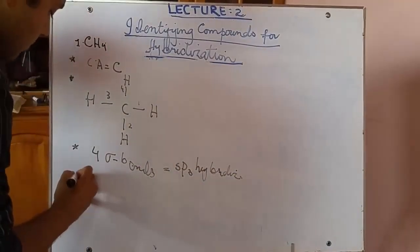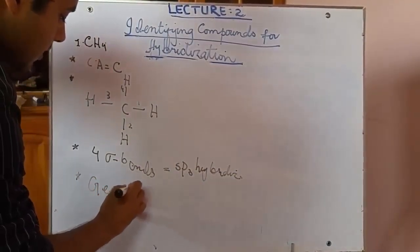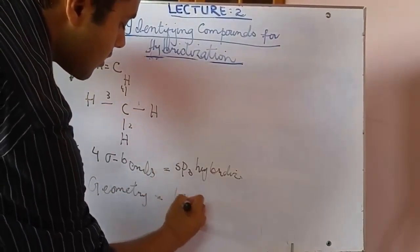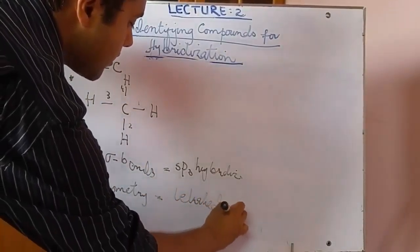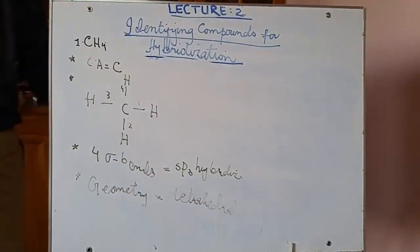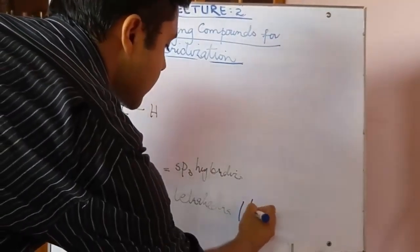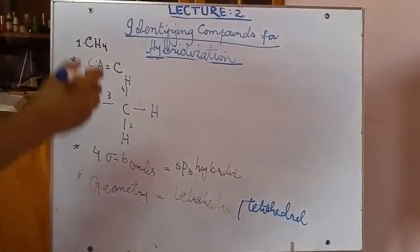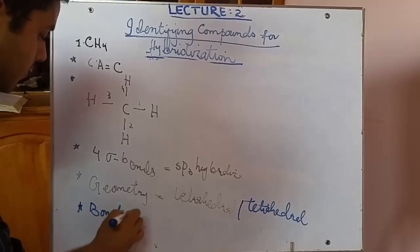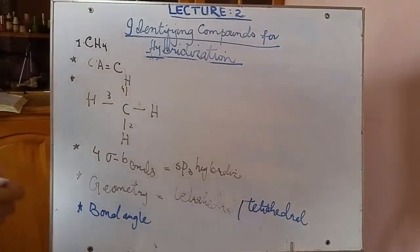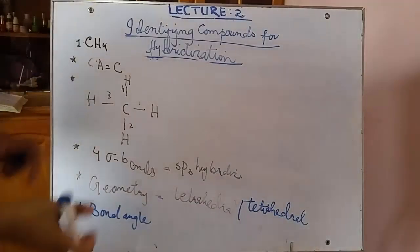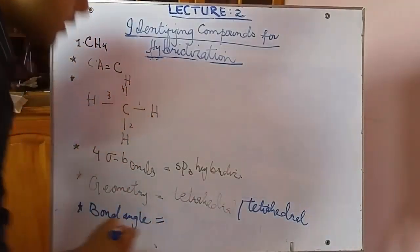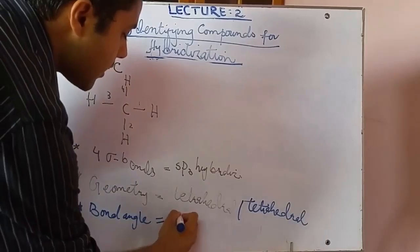Now write the geometry of the compound. sp3 hybridization always gives a tetrahedral geometry. The bond angle for sp3 hybridization is 109.5 degrees. These are the key steps you have to follow for every compound to draw the structure using hybrid orbital theory.